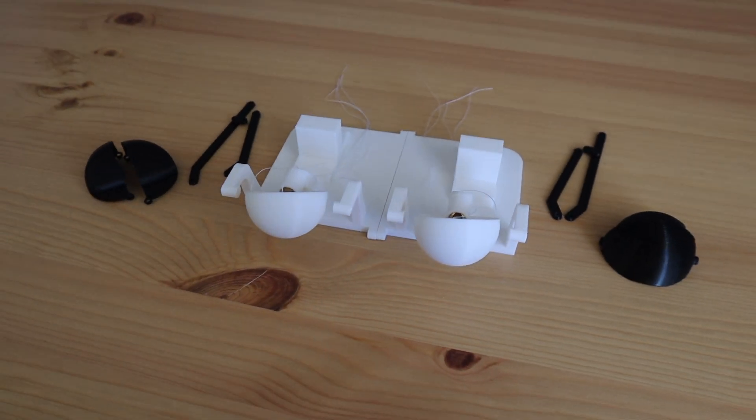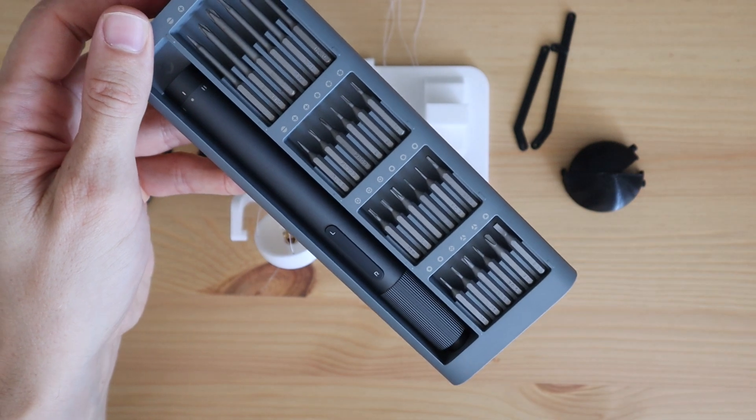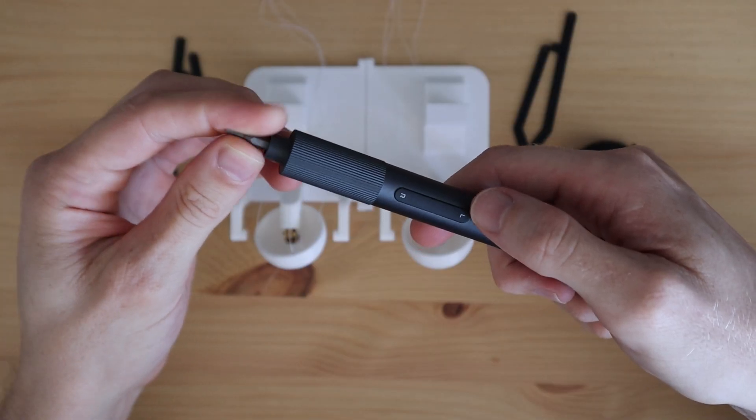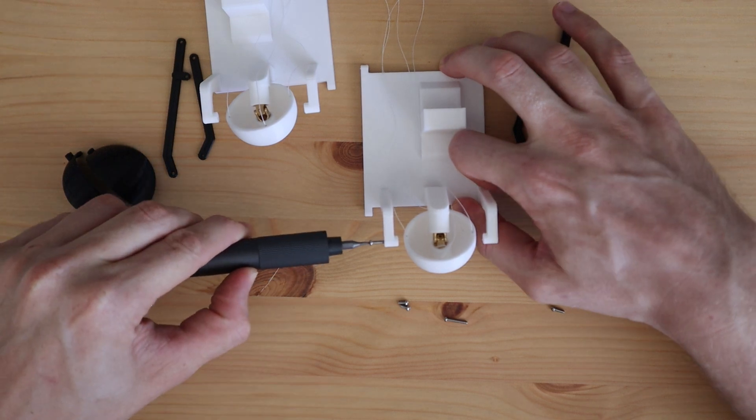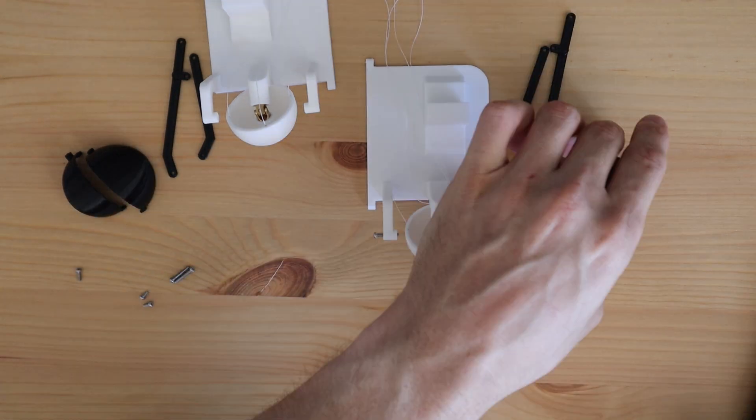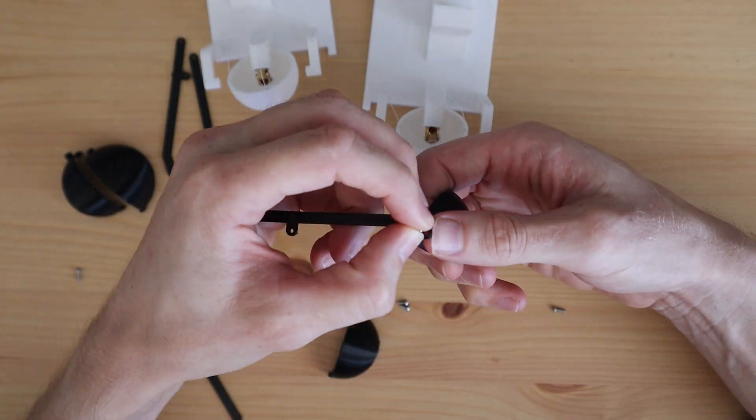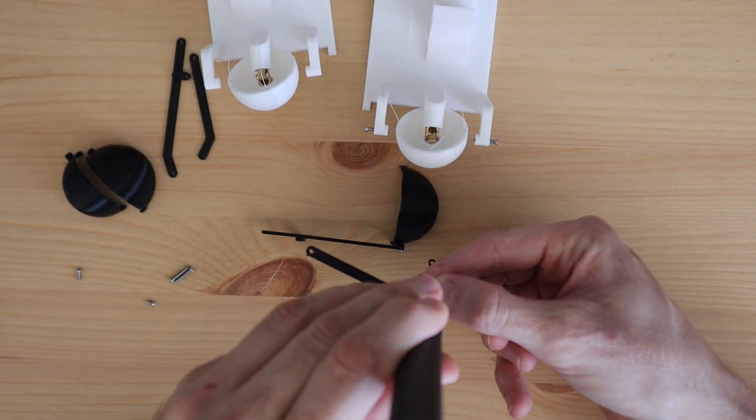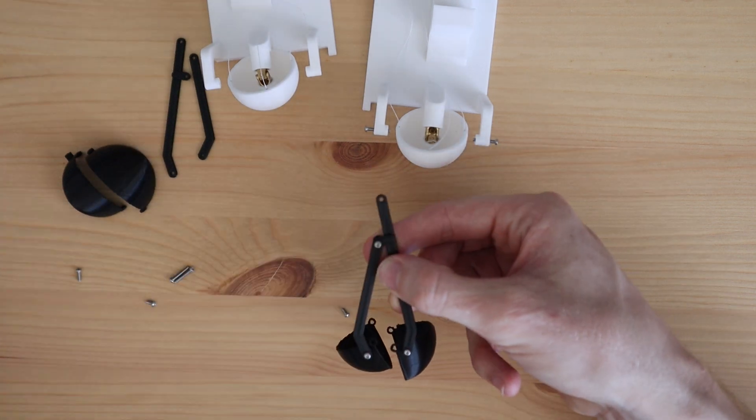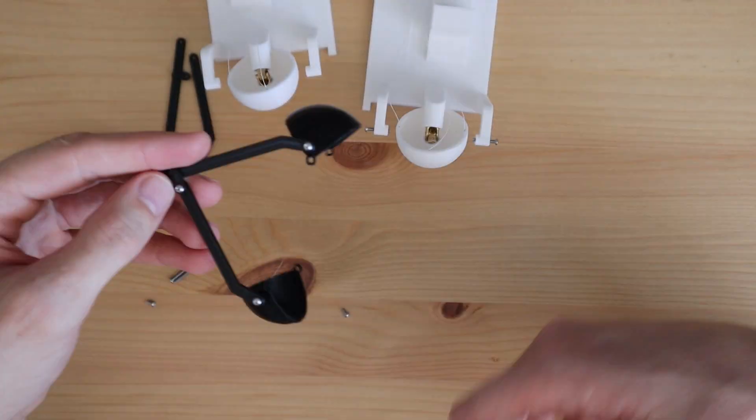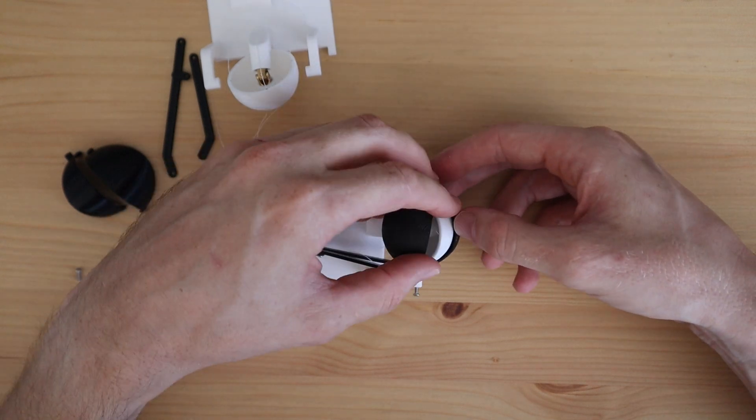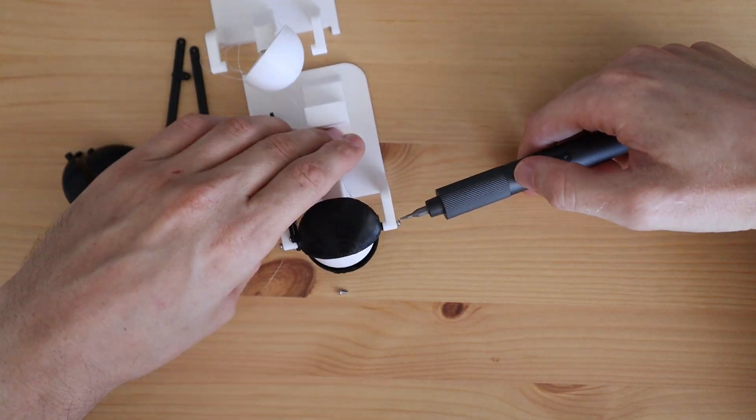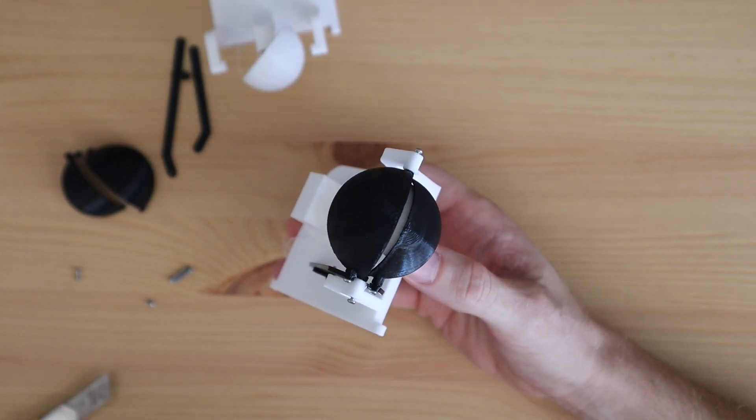Now let's add our eyelids. These pivot around some M2 screws on either side of each eye, and a 3D printed push rod is going to be connected between each eyelid and the servo behind it. The screws need to be adjusted a bit. You want them tight enough so that they hold the components.